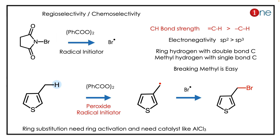Because the sp2 bond energy is high, ring substitution does not happen — only side chain substitution happens. Peroxide initiates the radical, and you can see how the side chain gets the bromine attached. For ring substitution most of the time, you need ring activation and an active catalyst like aluminium chloride — a Lewis acid. The key concept here is: NBS in peroxide conditions always creates radicals.